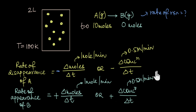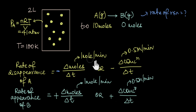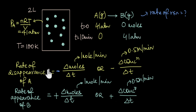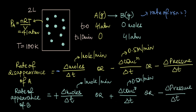We can also calculate the rate in terms of pressure, especially if the reactants are gases. With 10 moles of A in a 2-liter container at 100 K, using the ideal gas equation the pressure comes out to be 41 atm. After 10 minutes, 10 moles of B also gives 41 atm. So the rate of disappearance of A and the rate of appearance of B in terms of pressure is 41 atm / 10 minutes = 4.1 atm per minute.